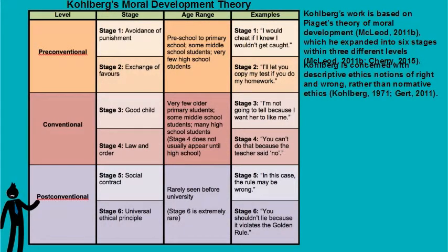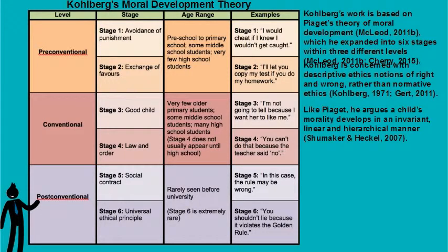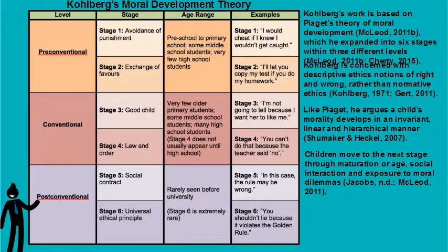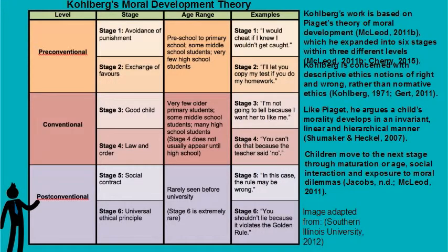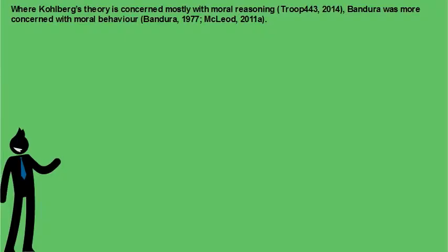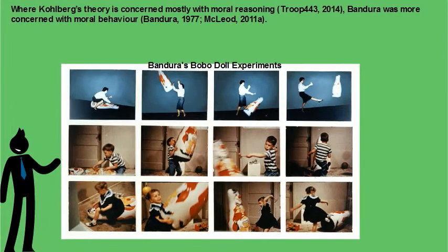Kohlberg's concern was with descriptive ethics — notions of right and wrong — rather than normative ethics. Like Piaget, he argues that a child's morality develops in an invariant, linear, and hierarchical manner. Children move to the next stage through maturation or age, social interaction, and exposure to moral dilemmas.